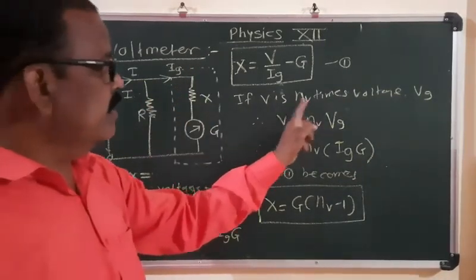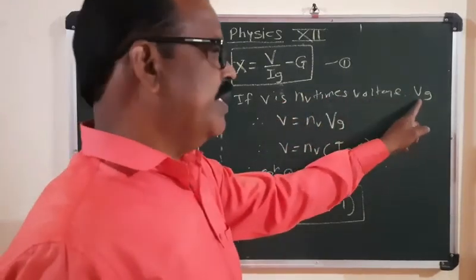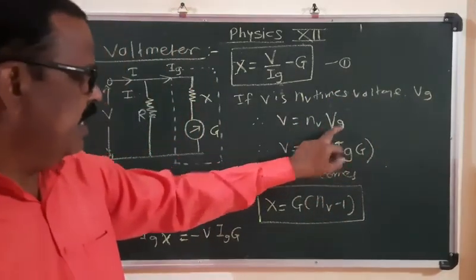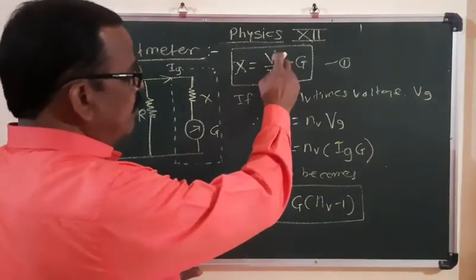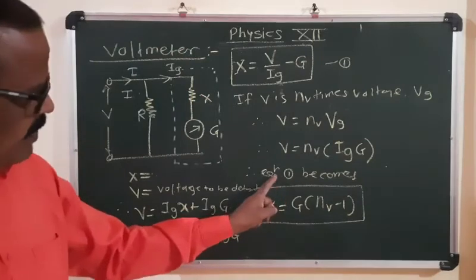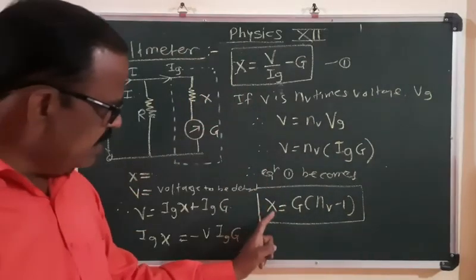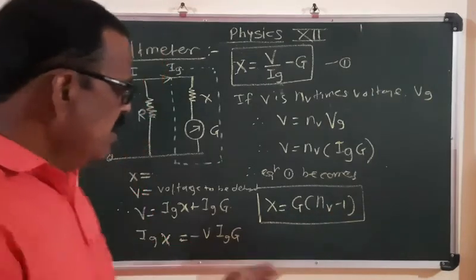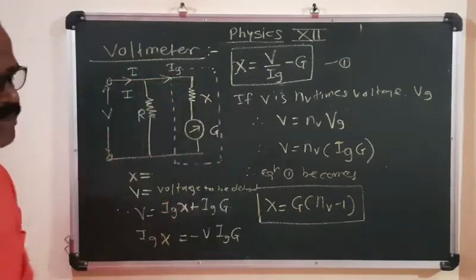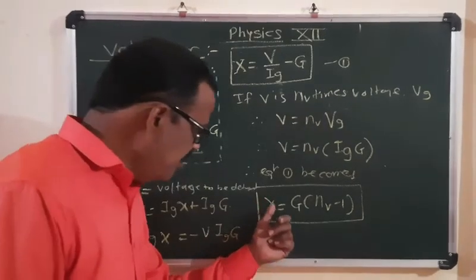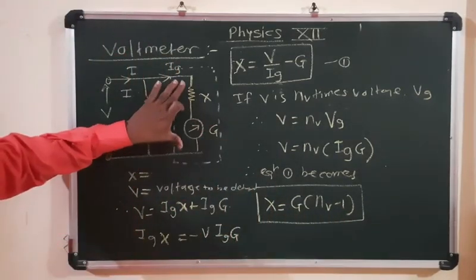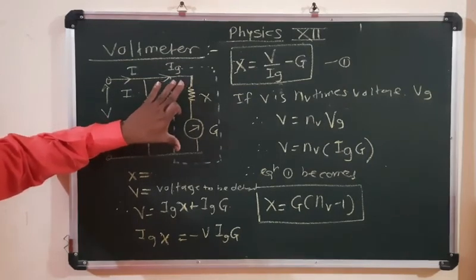If V = Nv·Vg, where Vg is the voltage across the galvanometer (Vg = Ig·G), substituting into the formula gives X = G·(Nv − 1). This high resistance X connected in series with the galvanometer increases the range of the voltmeter, enabling it to measure large values of potential difference.